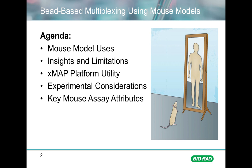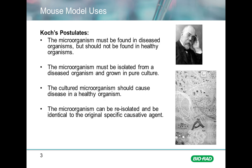When planning experiments, there are a variety of considerations that are quite important. When using mouse models, we'll take a look at some of those, and we'll finish by looking at some of the attributes of assays that will make them optimal for mouse experiments. Now, before we get started, I want to frame this conversation in the context of Koch's postulates.